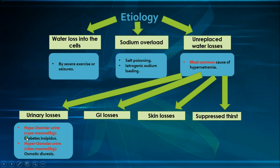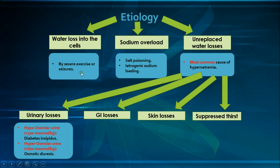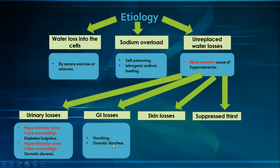Diabetes insipidus can be either central or nephrogenic. In osmotic diuresis, an osmotically active substance excreted through the urine draws water with it, as seen in hyperglycemia or mannitol use. Note that almost all conditions of hypernatremia will have a hyperosmolar urine — not because of osmotic diuresis, but because of ADH release trying to correct the hypernatremia.